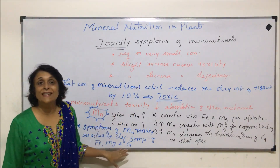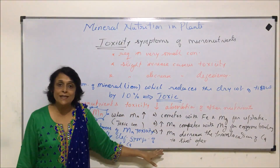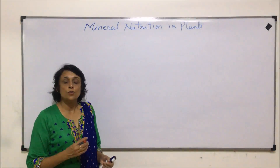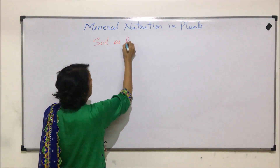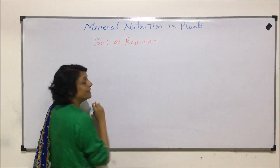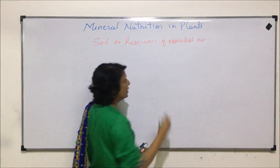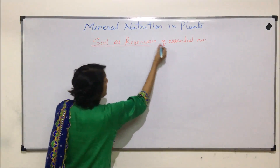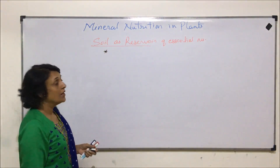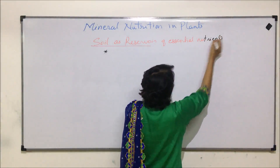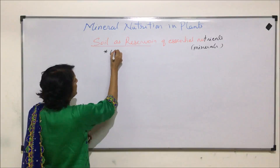Now let us talk about how these elements get translocated and from where. We will talk about the source from where these elements are taken and the translocation process. Soil acts as the reservoir of these essential elements. There are two processes by which these essential nutrients — which we call minerals — come into the soil. The first is weathering of rocks.